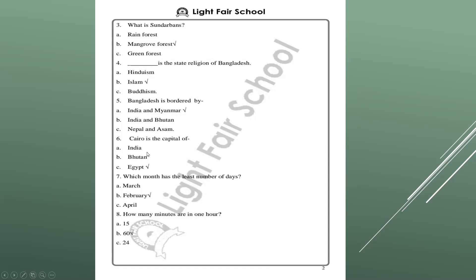Number six: Cairo is the capital of Egypt. Number seven: which month has the least number of days? March has 31 days, February has 28 days — and 29 after every four years — and April has 30 days. I sing a song to remember: '30 days has September, after June and November, all the rest have 31, except February alone.' So February is the answer — it has the least number of days.